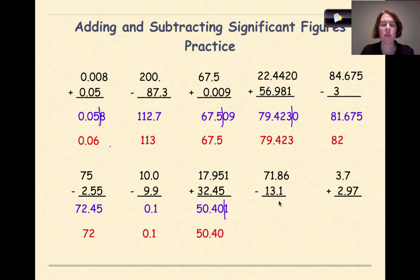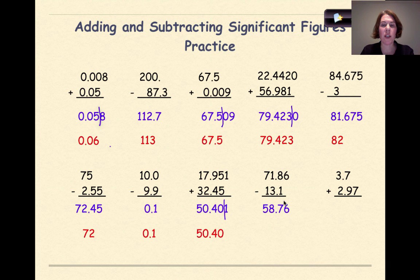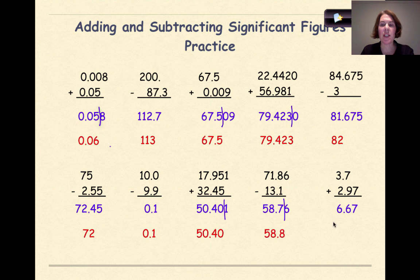71.86 minus 13.1. When we subtract these two numbers, we get 58.76. The 13.1 only goes out one decimal place, so we take the 6, round it up, and get 58.8. Finally, 3.7 plus 2.97. When we add these together, we get 6.67. The 3.7 only goes out one decimal place, so we round up and get 6.7.